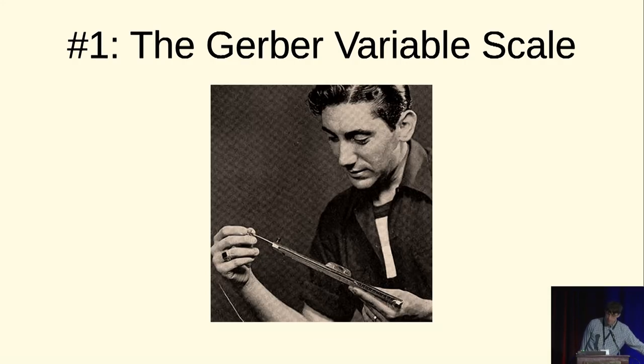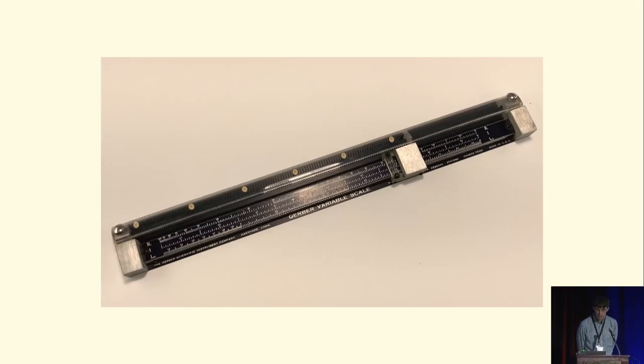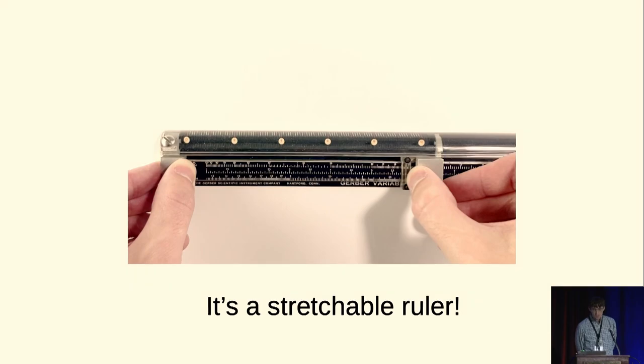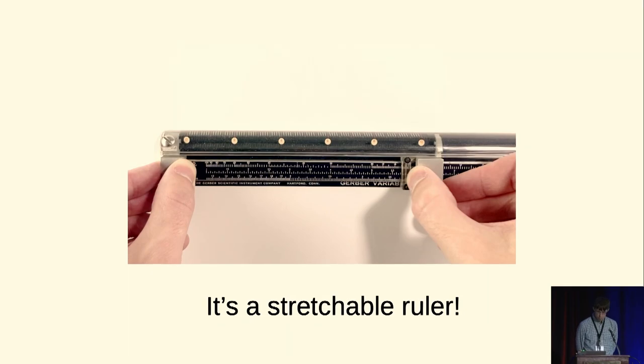The first one is the Gerber variable scale. I've got one here. It's about the size of a ruler. This is a young Joe Gerber holding one. It looks like that. Here's what it is. It's a stretchable ruler.